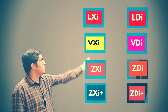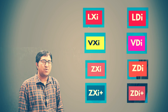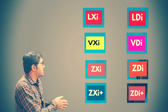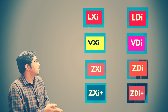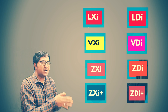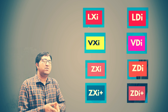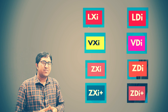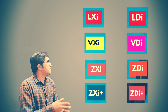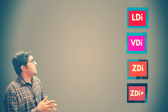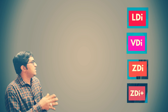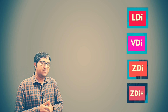XI is used for petrol variant cars and DI is used for diesel variant cars. So LXI, VXI, ZXI, and ZXI Plus are petrol-based cars in which we are using petrol as a fuel, while the suffix DI represents the diesel-based model in which we are using diesel as a fuel.